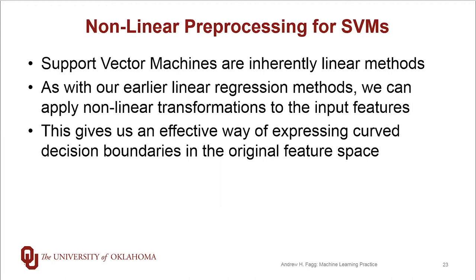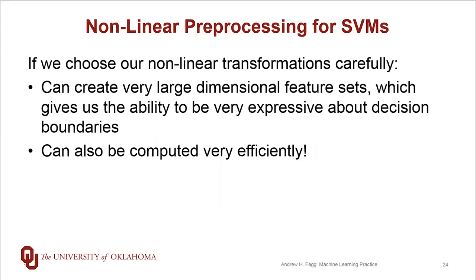What this gives us in the context of doing classification is that we can express curved decision boundaries in our original feature space. These nonlinear transformations can be quite powerful. We can take a very small set of features and expand those out to a very large number of features, giving us a lot of capability for building very expressive decision boundaries. What's cool about support vector machines is that we can also do these computations very efficiently if we do things right. So let's talk about the transformation process and a little bit more about the mathematics of actually using these nonlinear transforms in the support vector machine world.